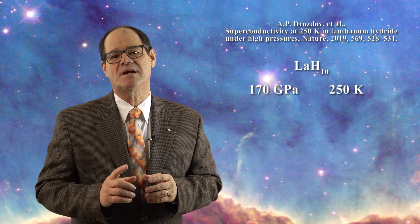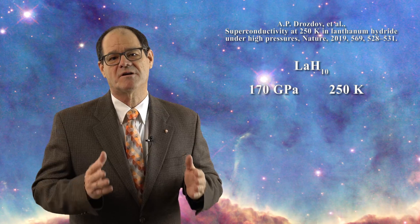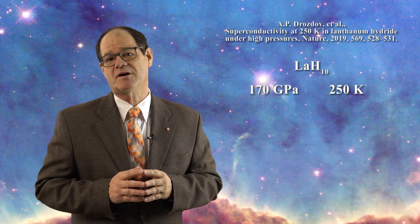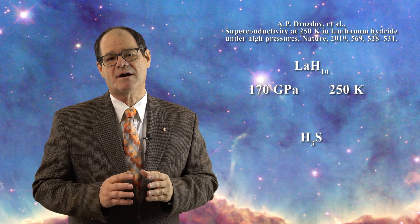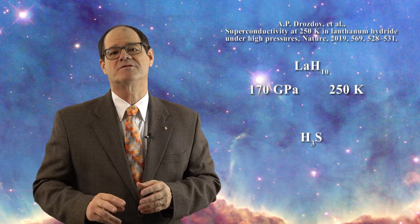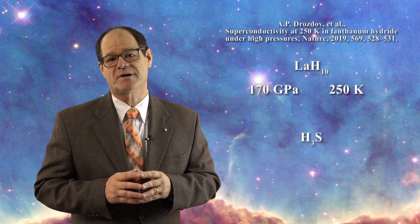Today, several of the highest temperature superconductors are precisely the kinds of compounds that Professor Ashcroft had predicted. For instance, lanthanum decahydride is now one of the highest temperature superconductors. It achieves superconductivity at 170 gigapascals and maintains it up to a temperature of 250 Kelvin — that is 50 Kelvin higher than the previous highest temperature superconductor critical temperature. Pressurized hydrogen sulfide is also a superconductor and is thought to transform into trihydrogen sulfide. Together with lanthanum decahydride, these two compounds are the highest known high-temperature superconductors.